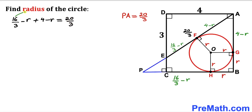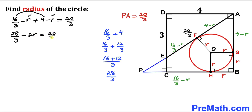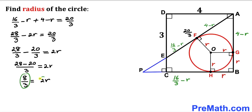Adding 16/3 and 4 gives 28/3, and combining the r terms gives 28/3 − 2r = 20/3. Moving terms, we get 8/3 = 2r. Multiplying both sides by 1/2 to isolate r, our radius r turns out to be 4 divided by 3.